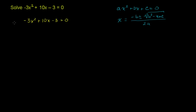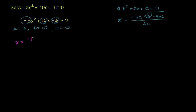So let's apply it here. In this case, a is equal to negative 3, b is equal to 10, and c is equal to negative 3. Applying the quadratic formula, we get x is equal to negative b — b is 10, so negative b is negative 10 — plus or minus the square root of b squared. b is 10, so b squared is 100.